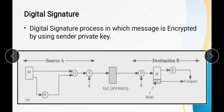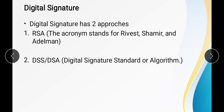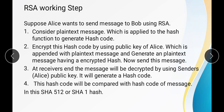Let us start with the types of the digital signature technique. Digital signature technique can be of two types. The first one is RSA, and the second one is DSA or DSS. RSA is an acronym that stands for Rivest, Shamir, and Adleman. DSA stands for Digital Signature Algorithm, and DSS stands for Digital Signature Standard. These are the two types of digital signature.